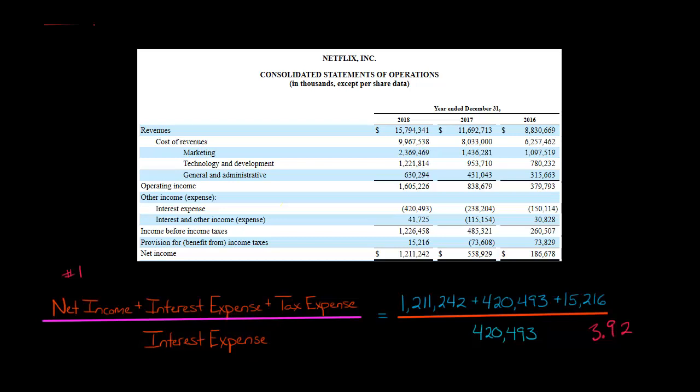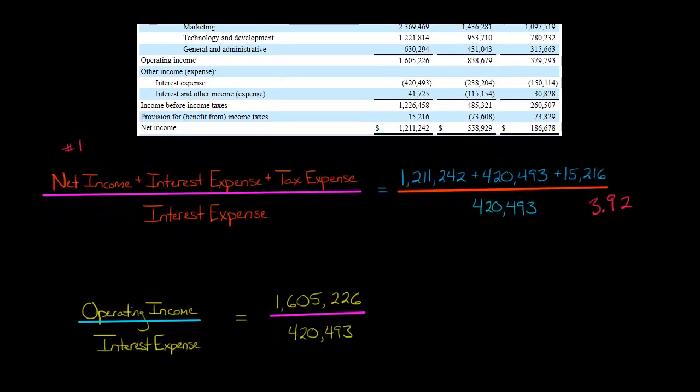Now, the other way of doing it would be to look in the numerator at operating profit, operating income, which is about $1.6 billion. So, if we do it that way, we take the $1.6 billion and then divide by interest expense, you're going to get a slightly different number. You're going to get 3.82.